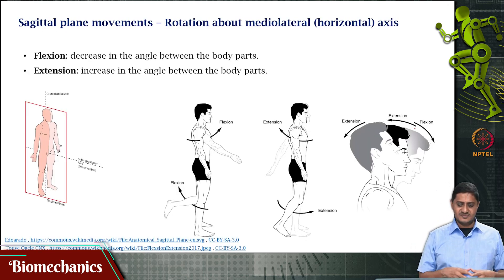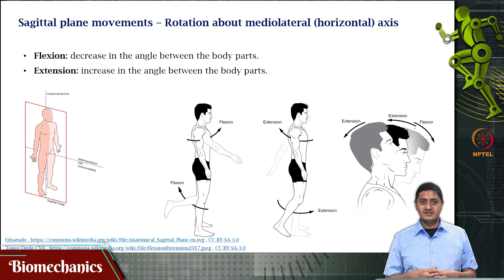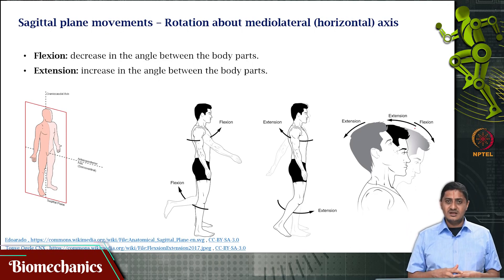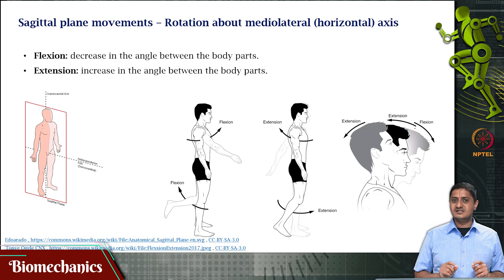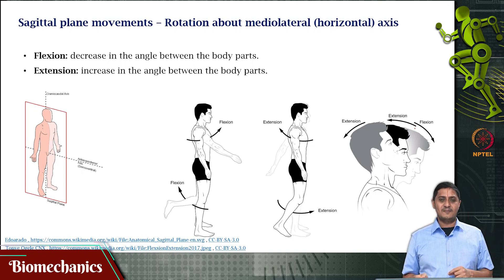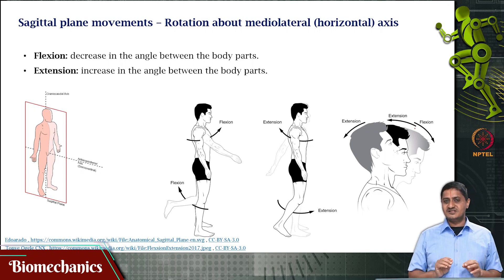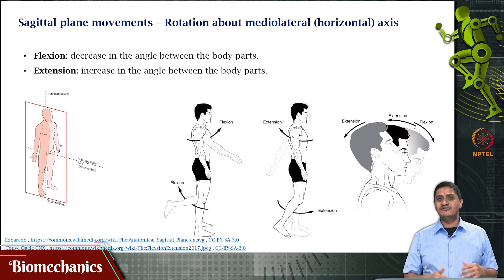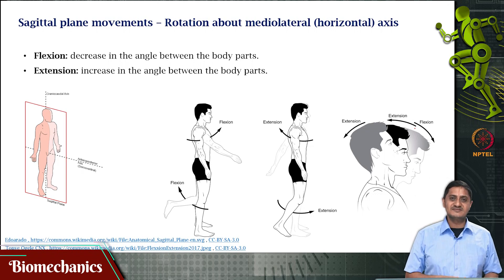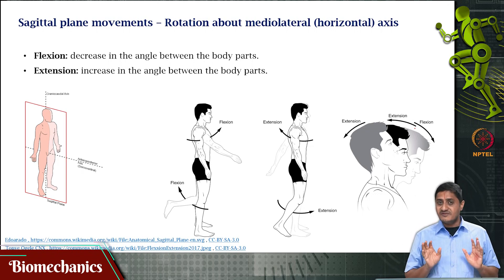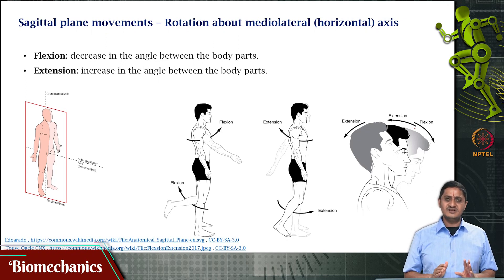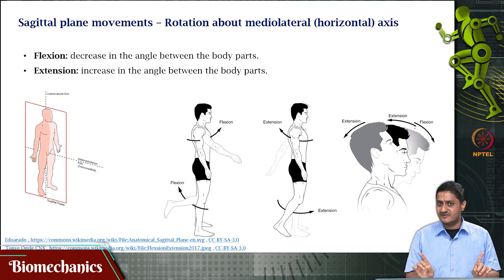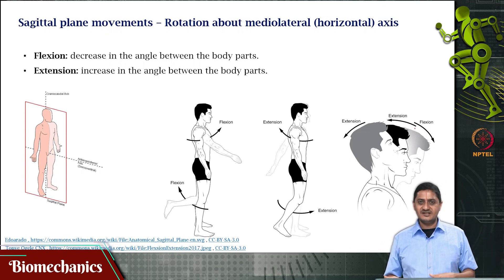What is the sagittal plane? The sagittal plane is the one that divides the body into a left side and the right side. Remember, not necessarily a left half and a right half. The sagittal plane which divides the body into a left half and a right half is called the mid-sagittal plane. Here, we are only focusing on a sagittal plane that divides it into two parts — not necessarily two halves — a left side and a right side.